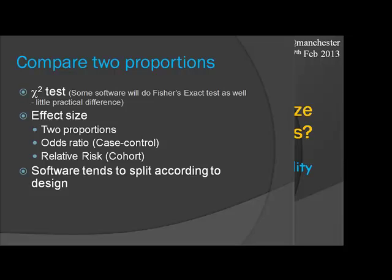Two proportions is essentially a chi-squared test. Some software will use an exact test or continuity-corrected chi-squared, but they're not very different and small differences don't matter much in practice. Your effect size could be expressed as the two proportions themselves — for example, 10% in one group versus 5% in the other — or it might be an odds ratio or a relative risk, depending on what your software offers and how you want to express your effect size. I usually end up using two proportions.